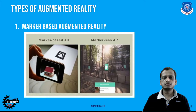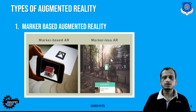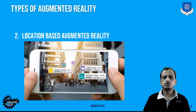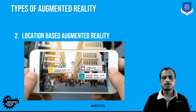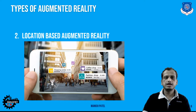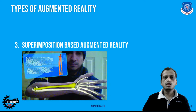Markerless AR is similar to the kind of application found in Google Maps, where physical locations and location names appear on top of the camera view — that is markerless AR. Moving on, we have location-based augmented reality — like Google Maps, where with the help of GPS tracking you can find locations, such as a coffee shop nearby, overlaid on top of the camera view within the application.